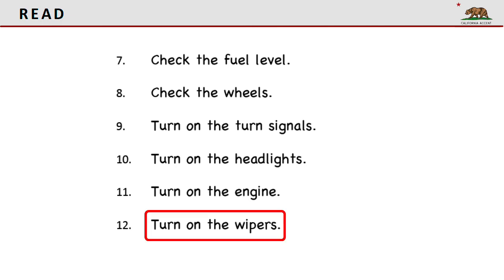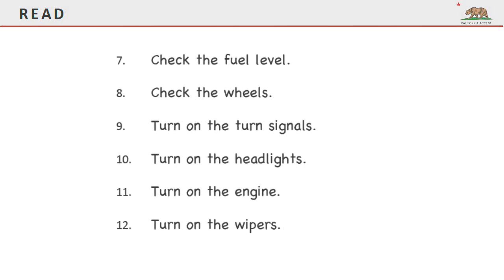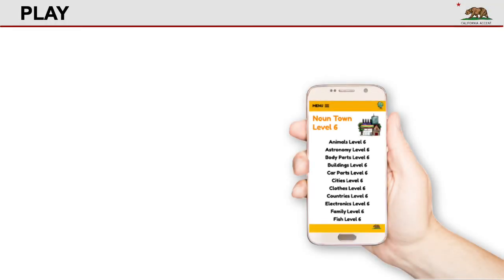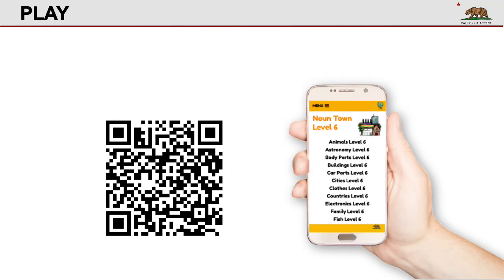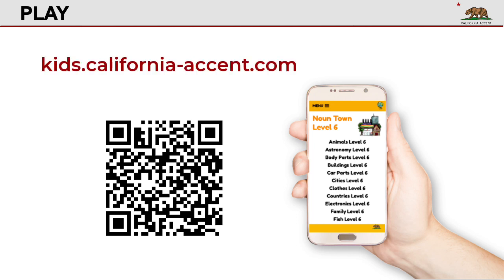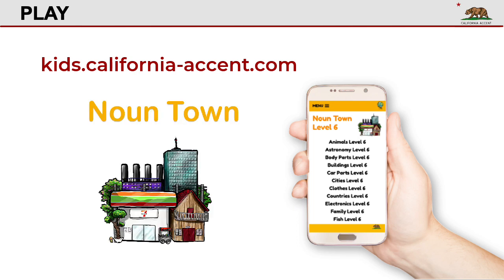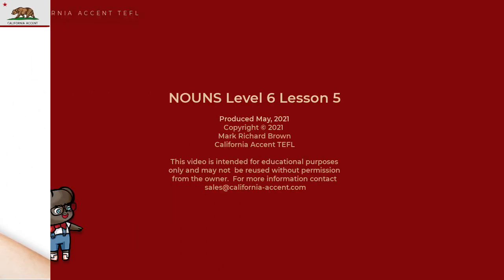Turn on the wipers. Now it's time to play. Scan this code with your phone, then go to kids.california-accent.com. Look for Nouns Level 6. That's the end of this lesson. Bye-bye.